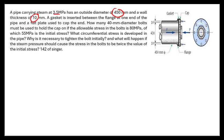A gasket is inserted between the flange of the pipe and a flat plate to cap the end. How many 40 millimeter diameter bolts must be used to hold the cap? The allowable stress is given as 80 megapascal.